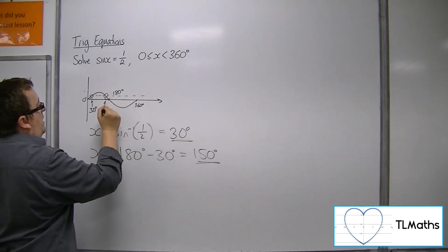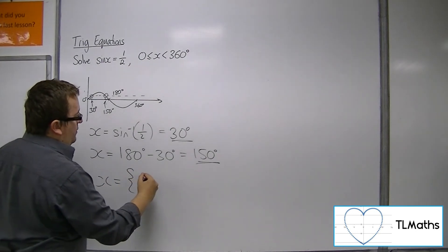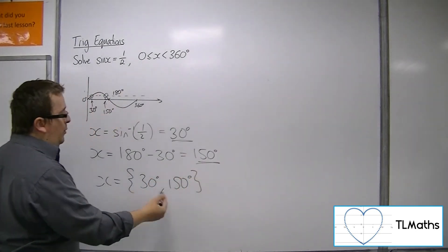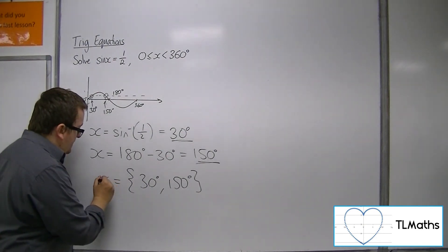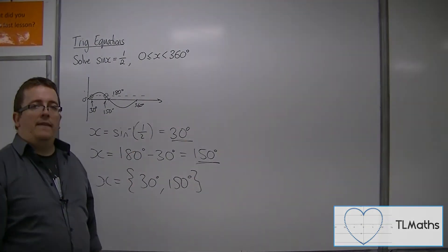So there are two solutions to this problem, 30 degrees and 150 degrees. And we can put our solutions into these curly brackets, so that you're grouping the solutions together.